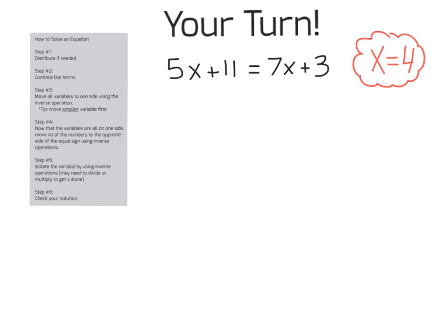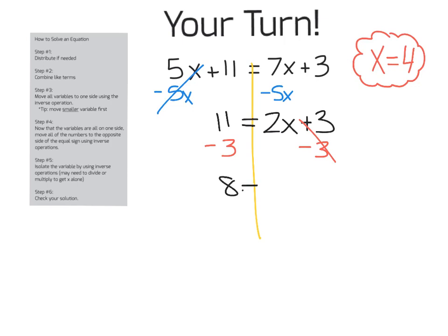All right, x equals 4. If you got that, you can continue on with some practice. If you did not get that, let's go through these steps here together. All right, I'm going to take 5x off of both sides so that on the left side I have 11 equals 7x minus 5x is 2x. 2x plus 3 is left on the right-hand side. Then I'm going to undo that addition by subtracting 3 from both sides, and I have 8 equals 2x. And my final step to isolate that variable is to divide both sides by 2. So, I'm left with x and 4. So, x equals 4.